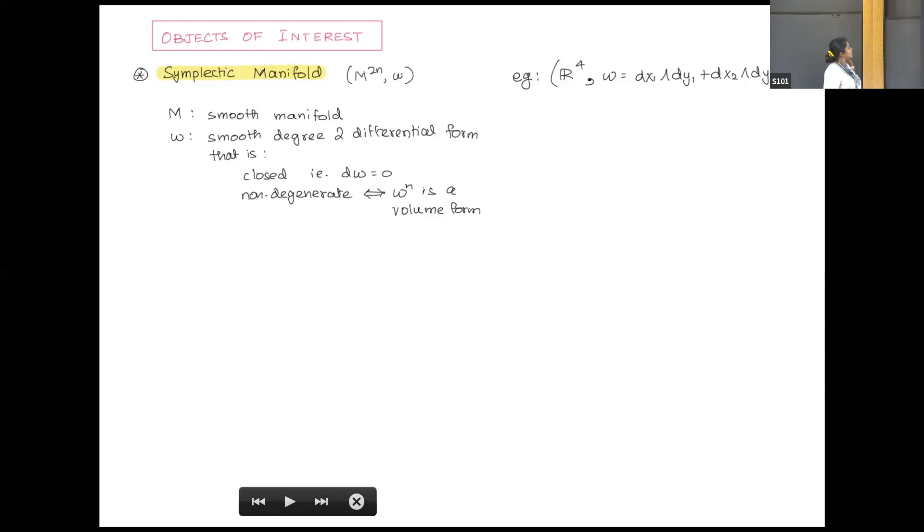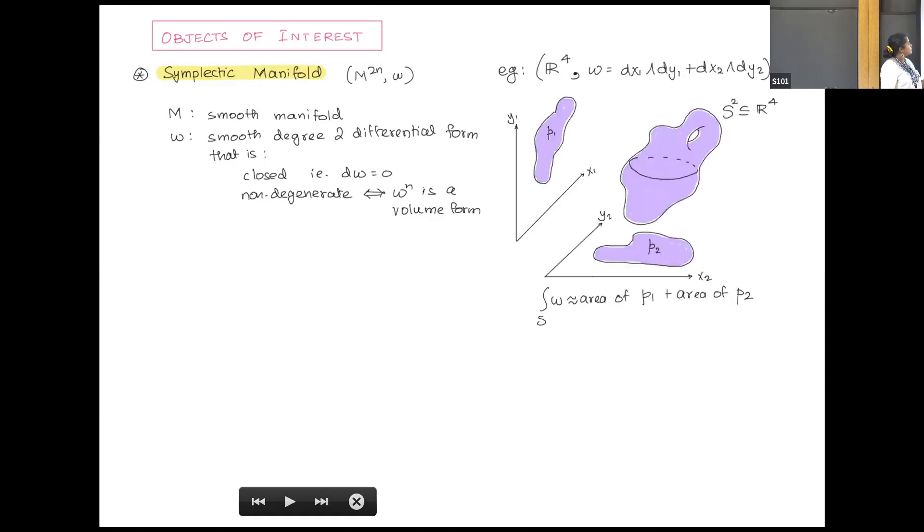The form is closed and non-degenerate, which means if you take its nth power, it's a volume form. An example I work with is R4 with symplectic form dx1 wedge dy1 plus dx2 wedge dy2. You can imagine if you have a surface, taking two projections onto these two planes and taking the areas and summing it up. There's some areas involved.